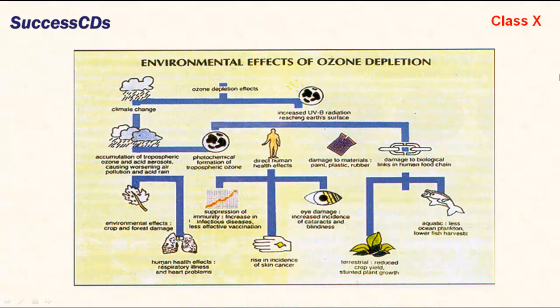Environmental effects of ozone depletion — impacts on human health include skin cancer, suppression of immunity, and cataracts and other eye damages. In plants, it reduces photosynthesis, kills plankton, and reduces the population of fishes. It also increases air pollution.